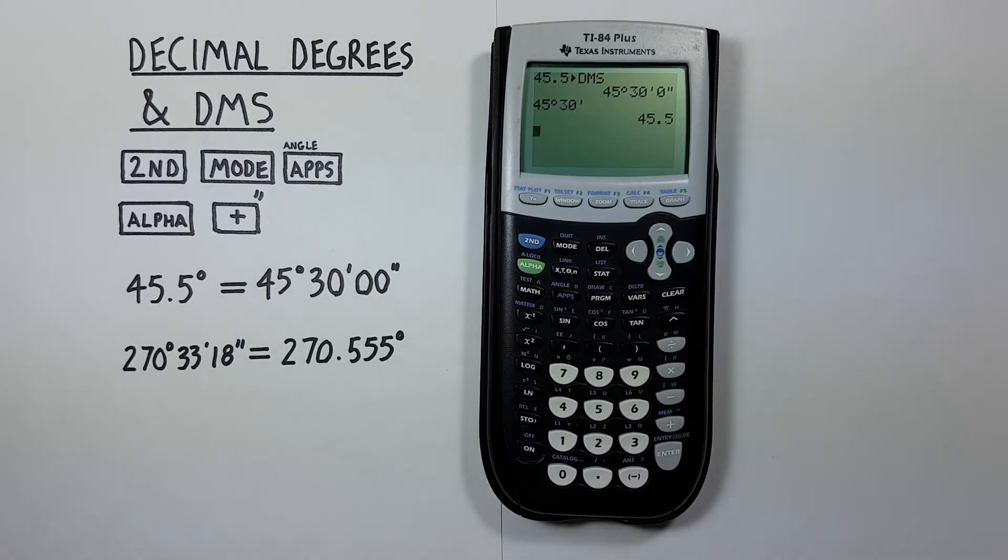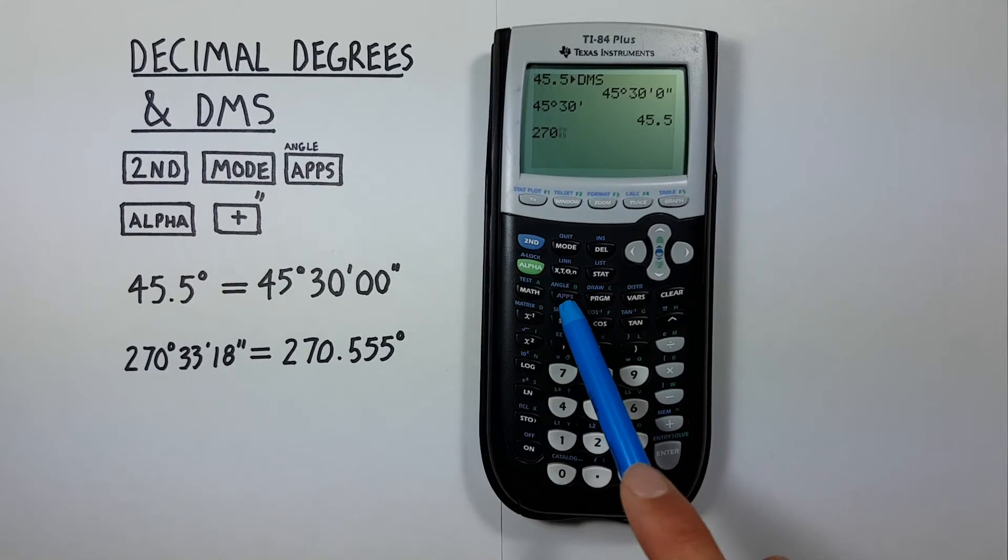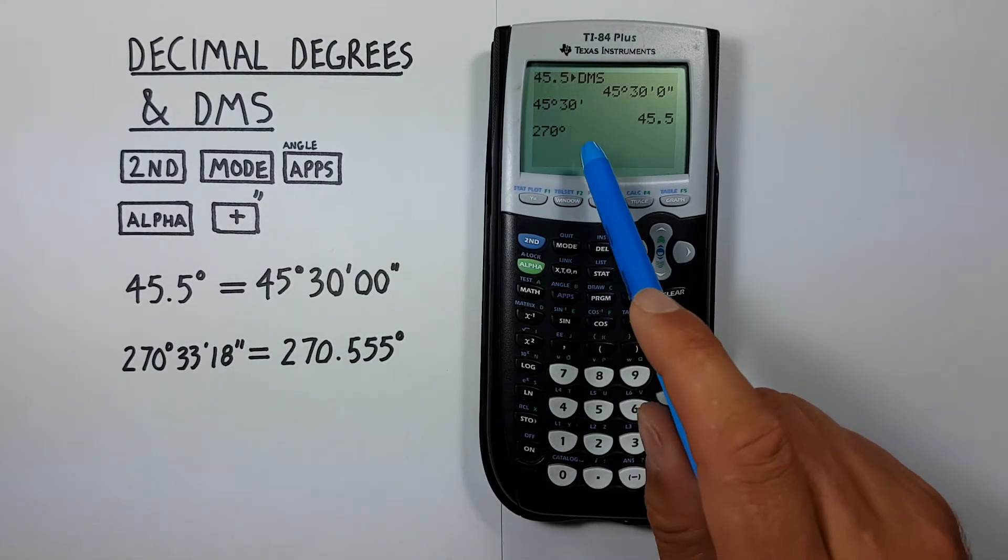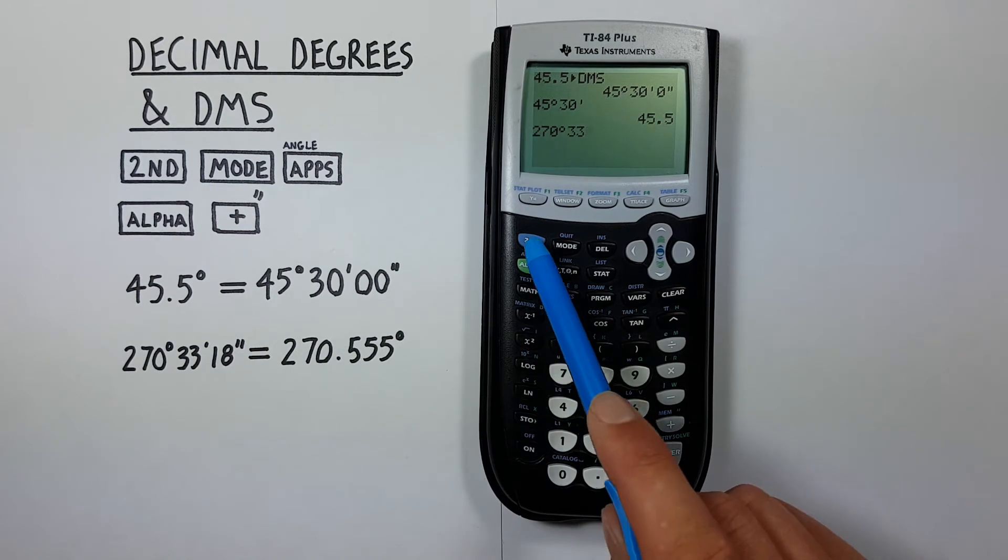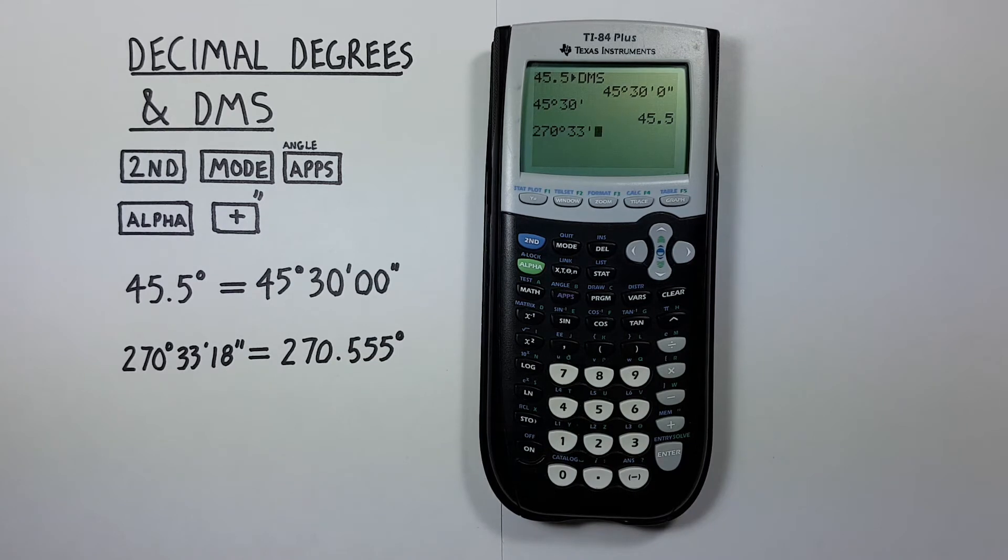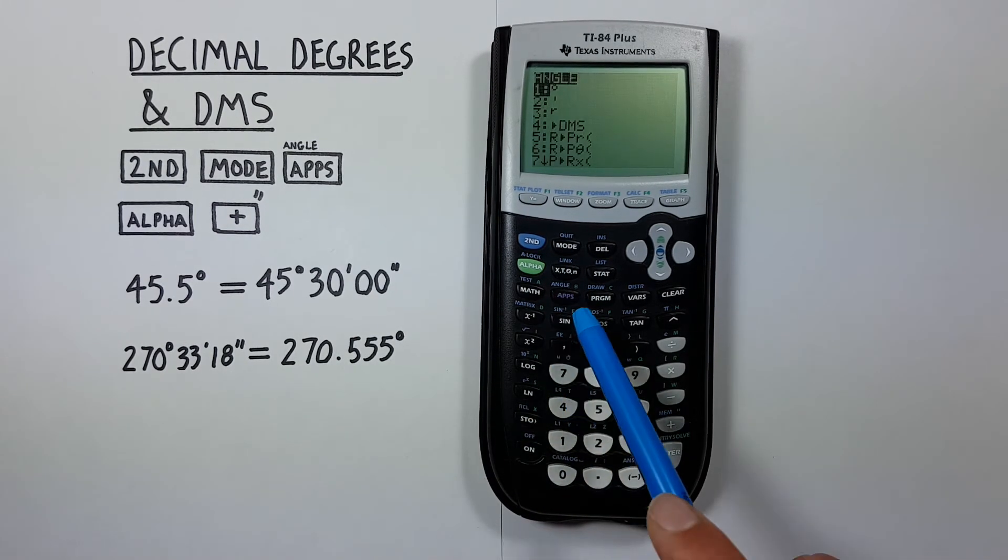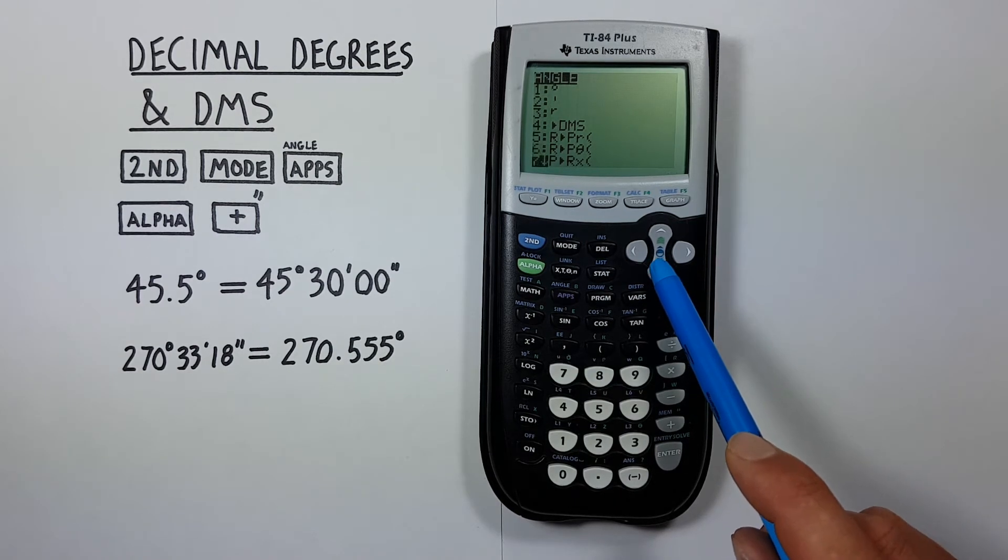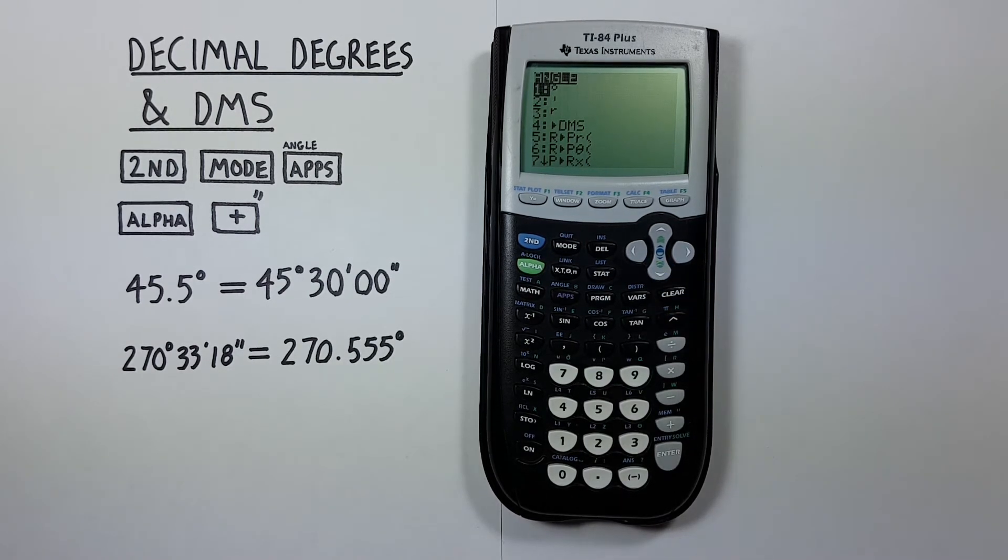But what if we want to convert something that has seconds, like let's say 270 degrees, 33 minutes, 18 seconds. Well, again, we start by entering our degrees, followed by our minutes. And then we can enter our seconds. In this example, 18 seconds. But if we look in our angle menu, we see there's no seconds symbol here. What we need to do is quit out of this menu.